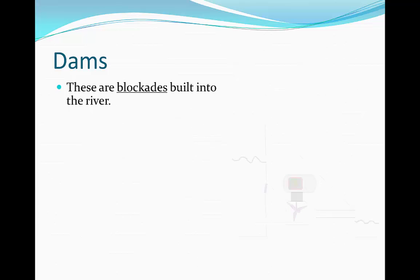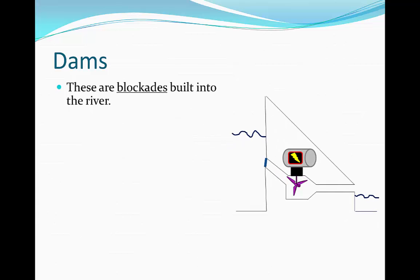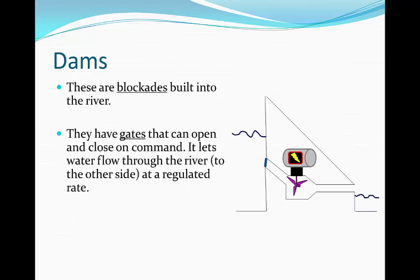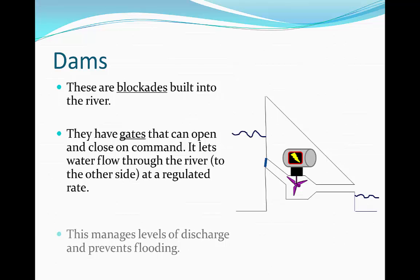The first technique is the most obvious, and this is a dam. These are blockades built into the river. They have gates that can open and close on command, so water flows through the river to the other side at a regulated rate — the gate opens and closes, and water can flow in and out on the other end.